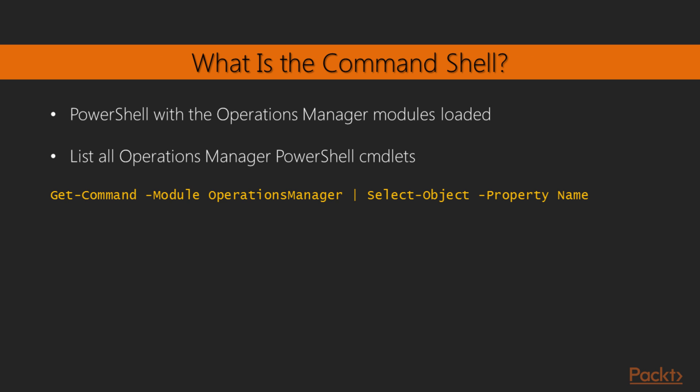So what is the command shell? Well, it is PowerShell with the Operations Manager modules loaded, and this is installed on all systems that have the console installed. You can get a list of all Operations Manager PowerShell cmdlets using the command Get-Command from the module Operations Manager — that's Get-Command -Module OperationsManager — and then pipe that to Select-Object and show the property of name. This will give you a basic list of all the command names in the Operations Manager PowerShell module. As new ones are added with updates and patches, this is a great command to run just to see what's been added.